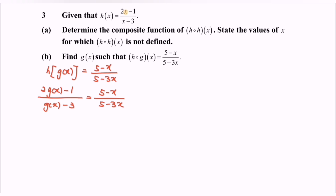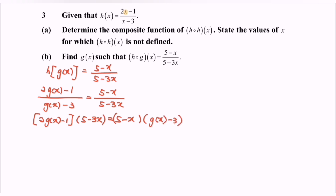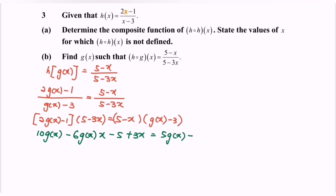Cross-multiplying, we have [2·g(x) minus 1] times (5 minus 3x) equals (5 minus x) times [g(x) minus 3]. Expanding: 10·g(x) minus 6·g(x)·x minus 5 plus 3x equals 5·g(x) minus 15 minus g(x)·x plus 3x.